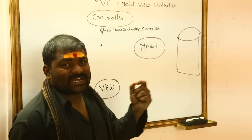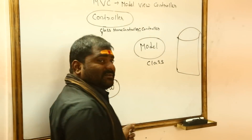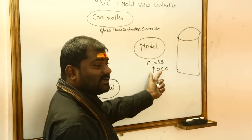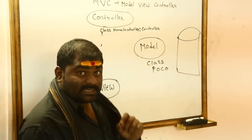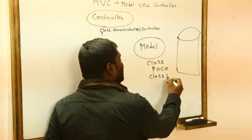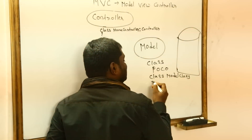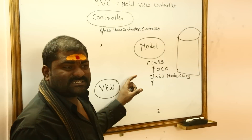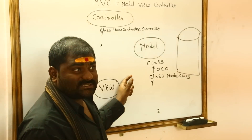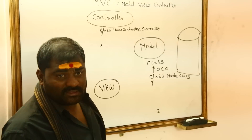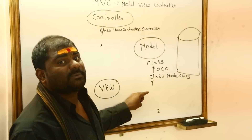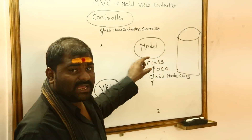Similarly, the model is also nothing but a class. In .NET we call the model class a POCO class — Plain Old CLR Object. This POCO class consists of only automatic properties. Properties are used to access the private data members of one class from another class. If a class consists of only automatic properties, then that class is called a POCO — Plain Old CLR Object.